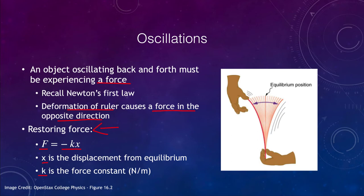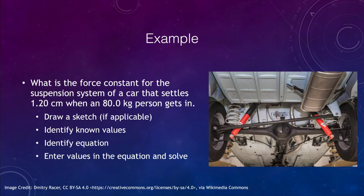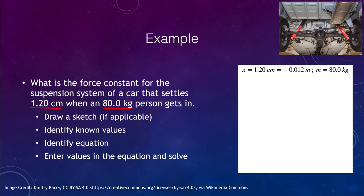Now let's look at an example to understand this better. We'll look at a suspension system in a car. A car settles 1.2 centimeters when an 80 kilogram person gets in — the springs are very stiff, settling only a couple of centimeters. The displacement is 1.2 centimeters, which we need to convert to meters.